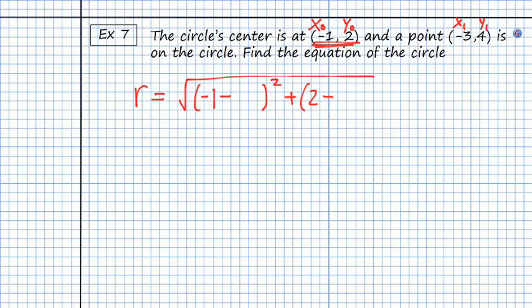And then this will be x1 and y1 so it's going to be negative 1 minus a negative 3, so that's going to be plus 3, and then 2 minus 4 squared. Alright so let's just evaluate this.